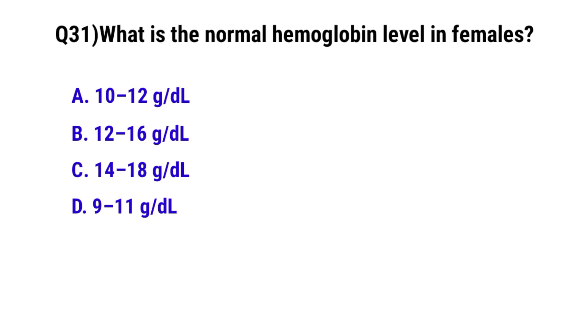Question No. 31. What is the normal hemoglobin level in females? The correct option is B: 12 to 16 grams per deciliter.